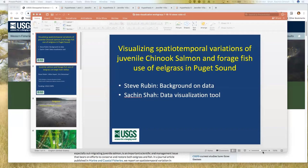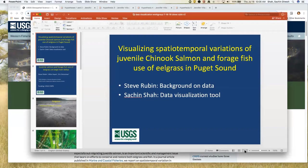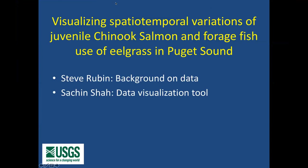Steve Rubin is a fishery biologist based in Seattle with USGS, now at the Western Fisheries Center, with USGS since 1994. He's presenting about young Chinook and their habitat in eelgrass in Puget Sound. Sachin Shah has been with USGS since 1999 with the Georgia and Texas Water Science Centers, spent six years in Asia with the World Bank Water Program in South Asia, and is now in Seattle as the international team lead.